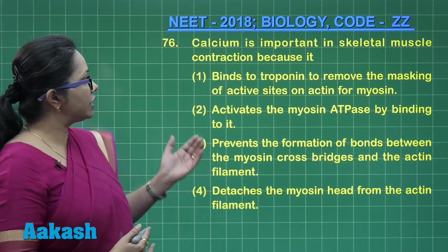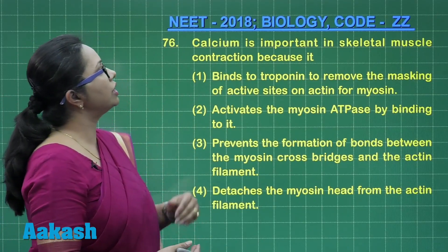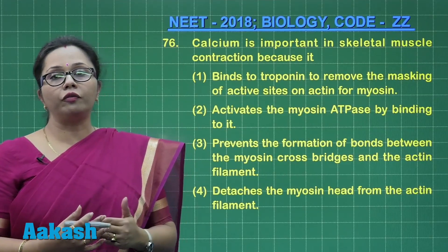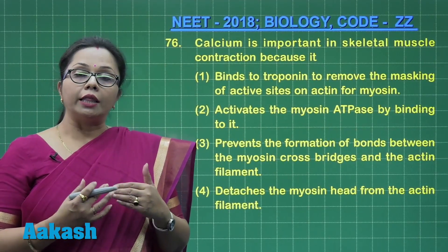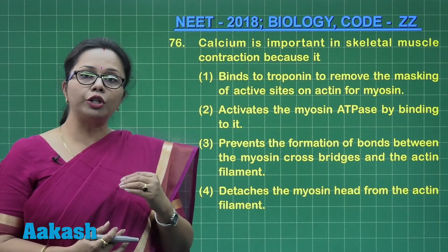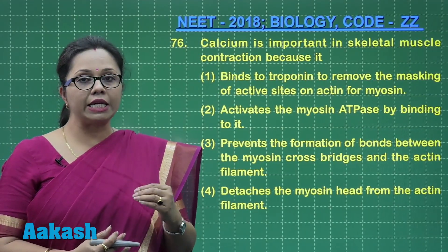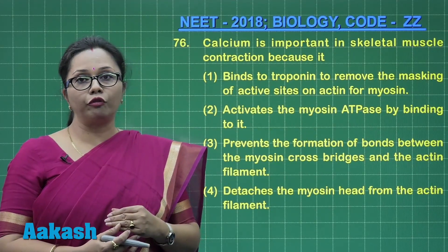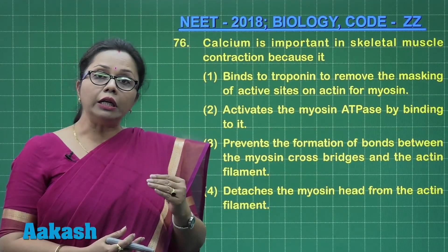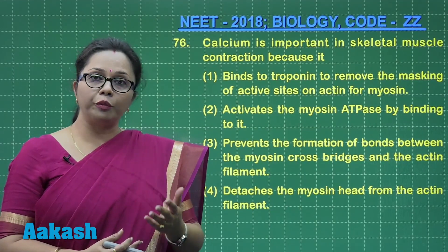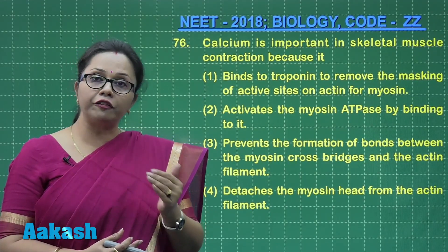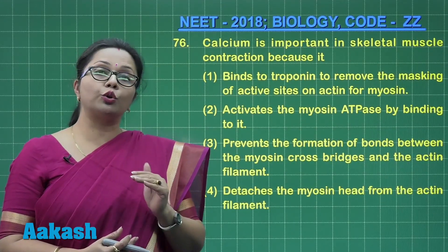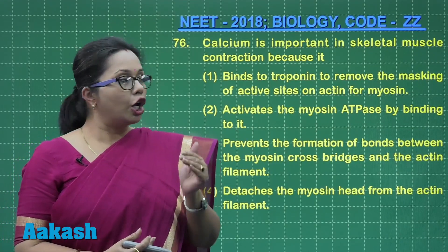In question number 76: calcium is important in skeletal muscle contraction because it binds with troponin C, a subunit of troponin. This calcium is released from the sarcoplasmic reticulum at the time of contraction, and when it binds with troponin C, there is a conformational change that shifts the tropomyosin molecule, unmasking the actin sites so they are free to bind with myosin.